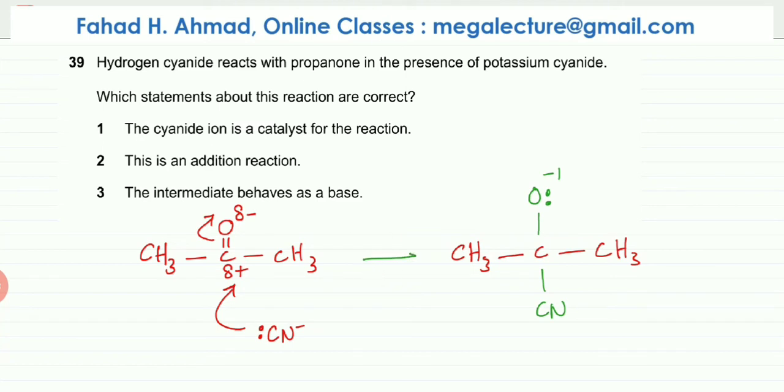That's your intermediate that is going to be formed. And in the next step, H plus 1 in the HCN would be attracted to the negative lone pairs on oxygen. And they're going to bond together to form an alcohol group on the top.